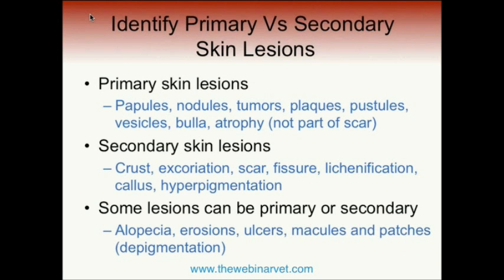As we identify our patient and look for skin lesions, we're trying to find those primary skin lesions related to the underlying pathomechanism of disease — the ones that are diagnostic and most useful to target. We want to avoid secondary lesions that are not diagnostic. They've evolved from primary ones, are usually a result of chronicity or self-trauma, and provide no more useful information than what we can already see in the clinic.